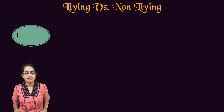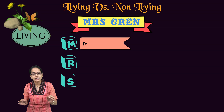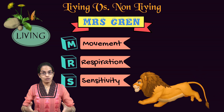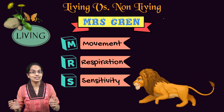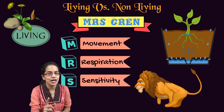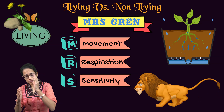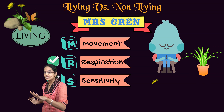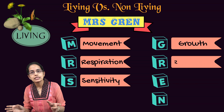A living organism can be characterized by a mnemonic: MRS GREN. M stands for movement, R for respiration, S for sensitivity. An organism which is living would be able to move — not necessarily from one location to another, but there is movement of nutrients and water within the plant. Then we have G for growth, R for reproduction, E for excretion, and N for nutrition.